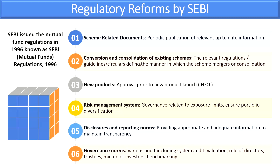SEBI has also laid down governance norms, including various audits such as system audits, valuation, role of directors, trustees, minimum number of investors, and benchmarking. To maintain transparency and a robust structure — mutual funds are now managing more than almost 40 lakh crore — system audits, valuation norms, roles of directors, sponsors, trustees, investor protection, benchmarking, and time-to-time reporting and auditing are all very necessary. SEBI has laid down comprehensive guidelines for governance norms.